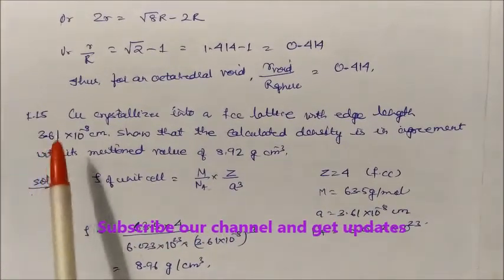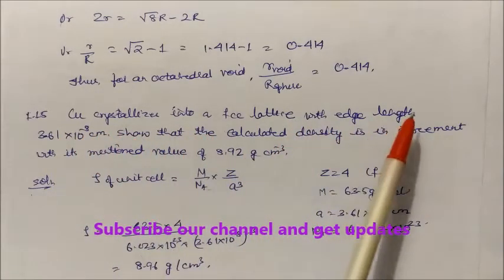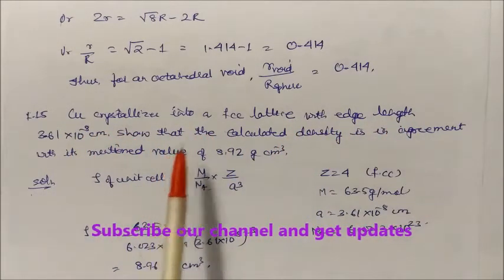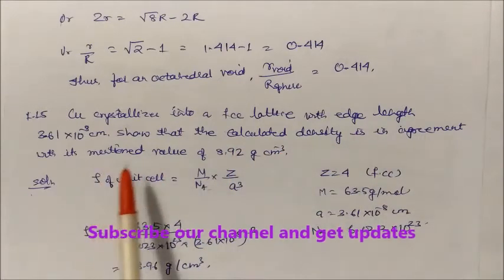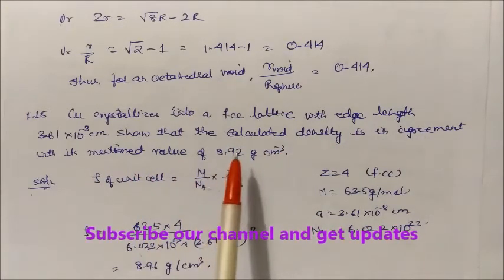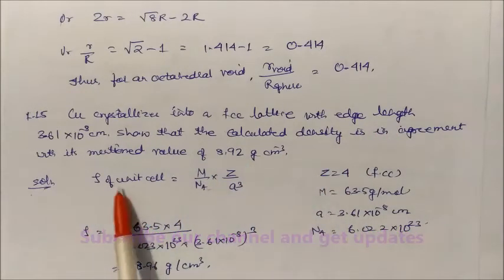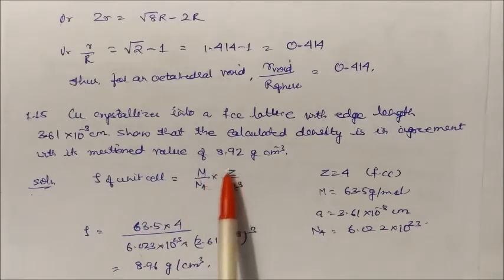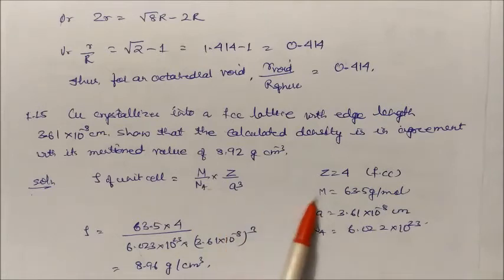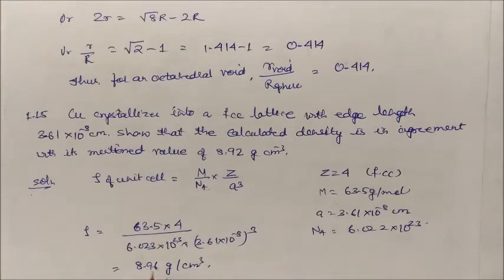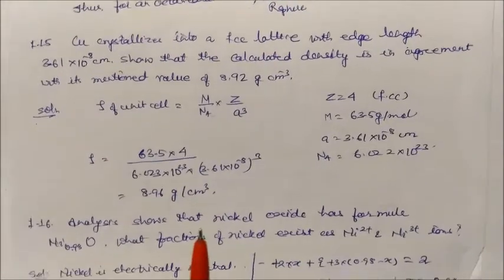Copper crystallizes in an FCC lattice with a given edge length. We verify the calculated density is in agreement with the mentioned value of 8.92 g/cm³. Using density = ZM / (a³ × Nₐ), with Z = 4, molar mass and edge length a substituted, we get a density of 8.96 g/cm³ for copper.